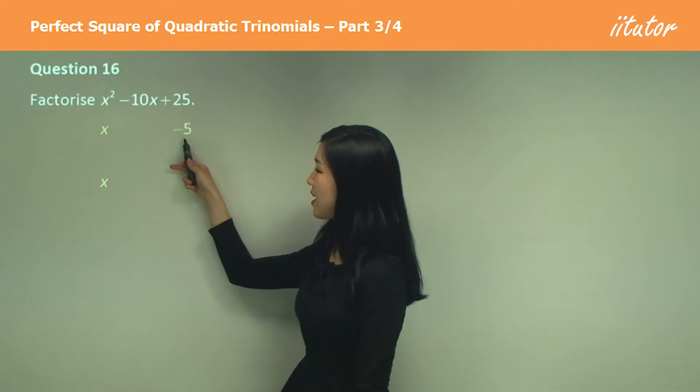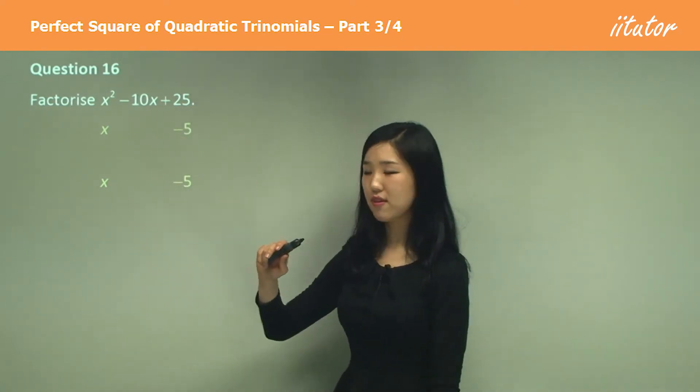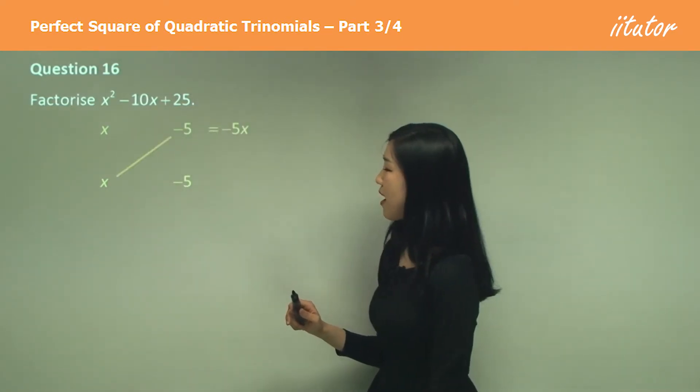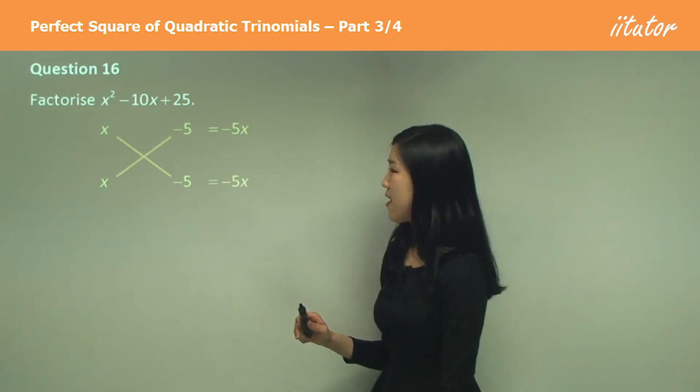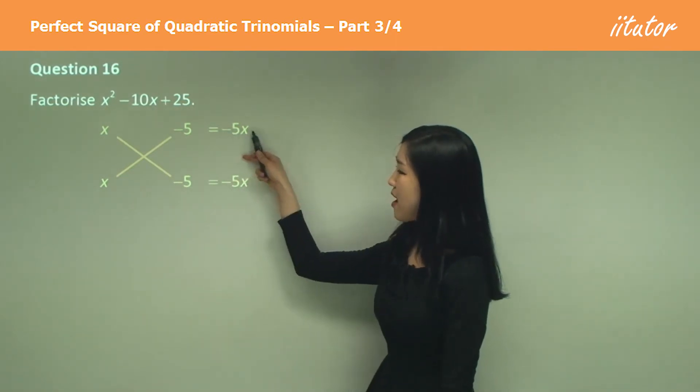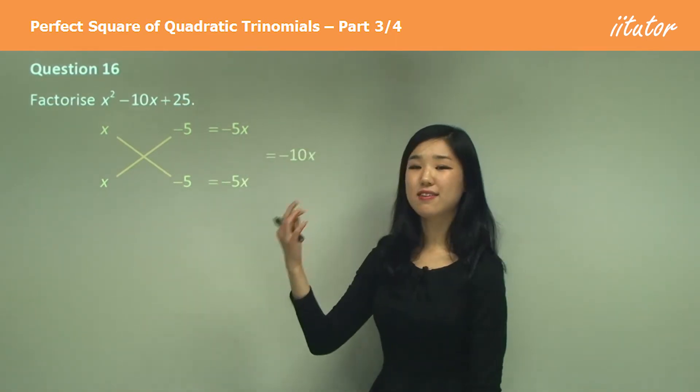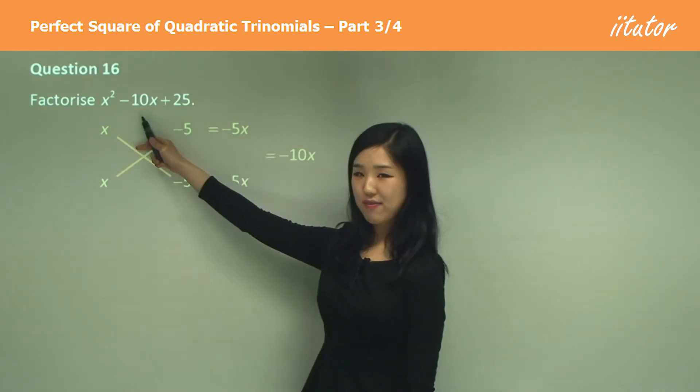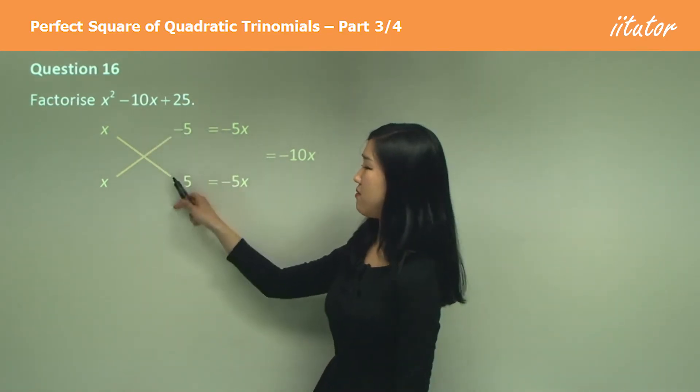So I put x and x and negative 5 and negative 5. Cross multiply, you get negative 5x, negative 5x. And if you add them, negative 5x minus 5x is negative 10x, which is what we have here. That's why you have to put negative negative on both.